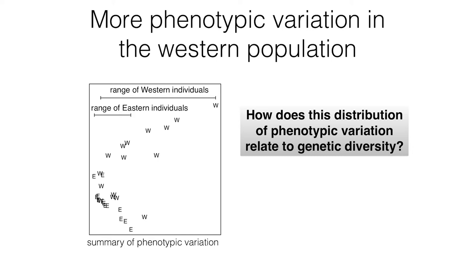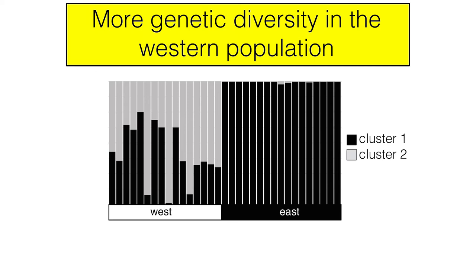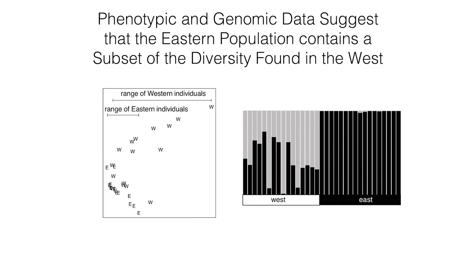We then applied a genomic approach to measure genetic variation. We assigned the genetics into two clusters. The western individuals seemed to have both clusters, while the east had only one cluster — less genetic variation, with individuals looking more similar. So we have agreement: more genetic variation in the west, and more phenotypic variation in the west. So maybe the question mark becomes a line — if you increase genetic variation, you do increase phenotypic variation. But this is an area where we really need to know a lot more.